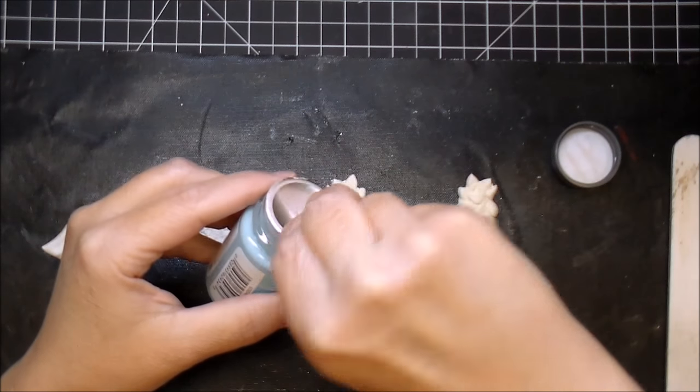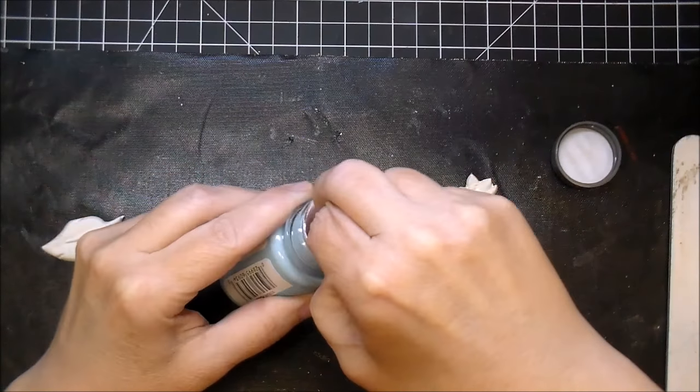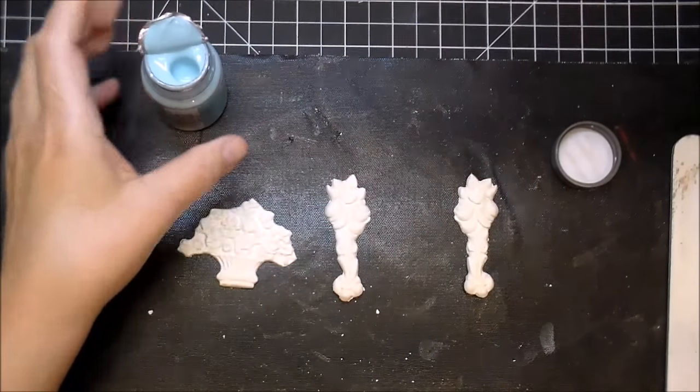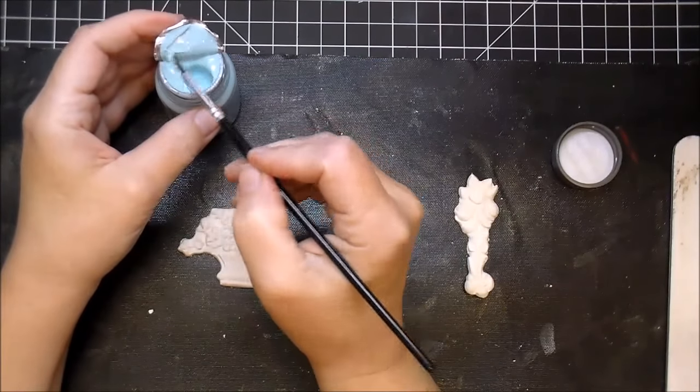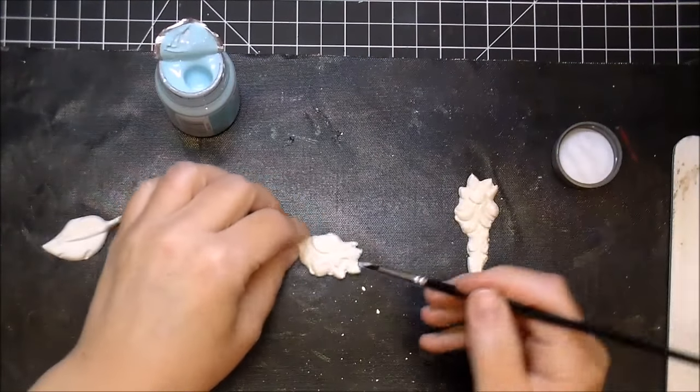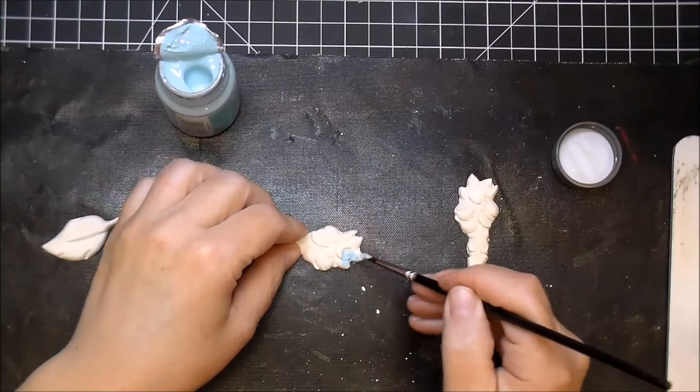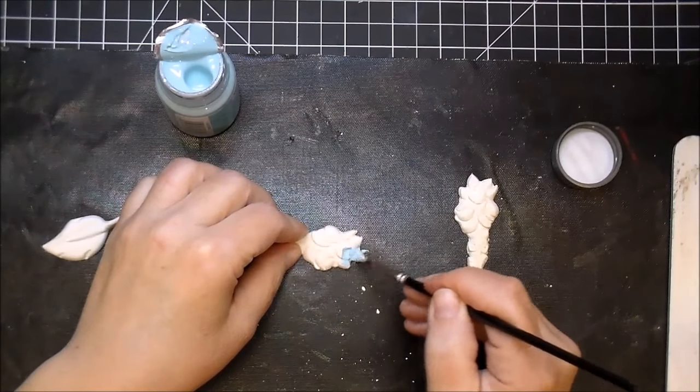This is just some acrylic paint that I got from Walmart. And I'm just using a tiny paint brush so I can get into all those little crevices, because with the Prima molds, they have such beautiful detail to them.